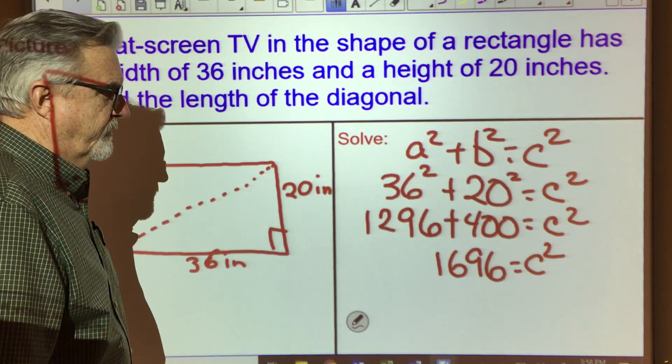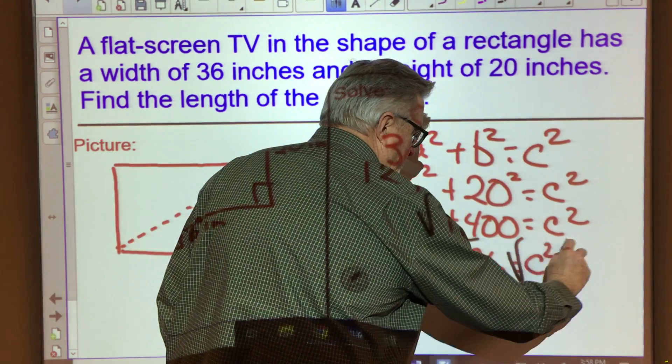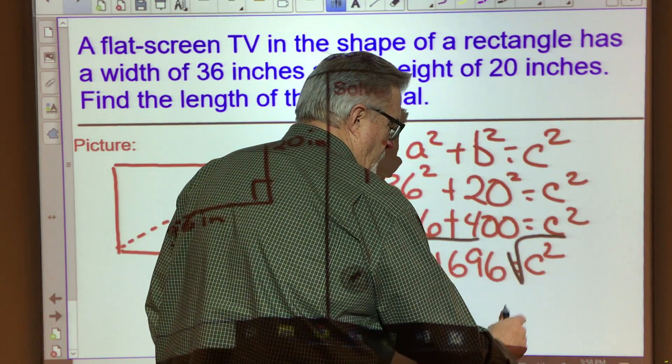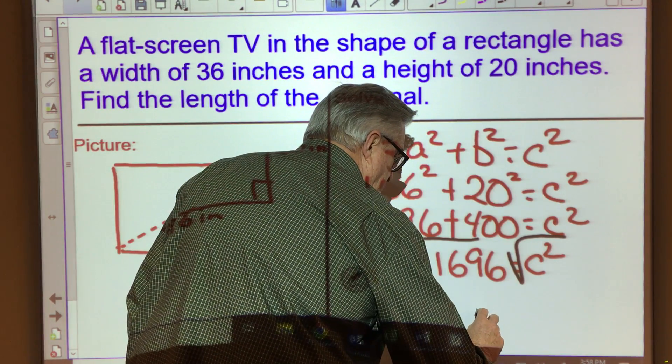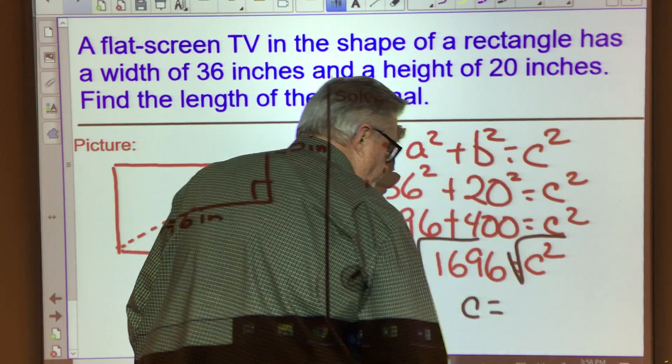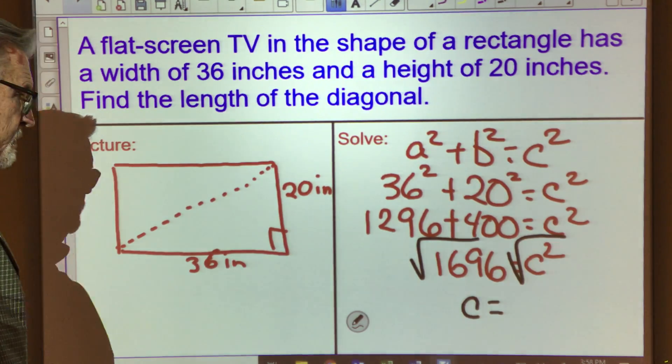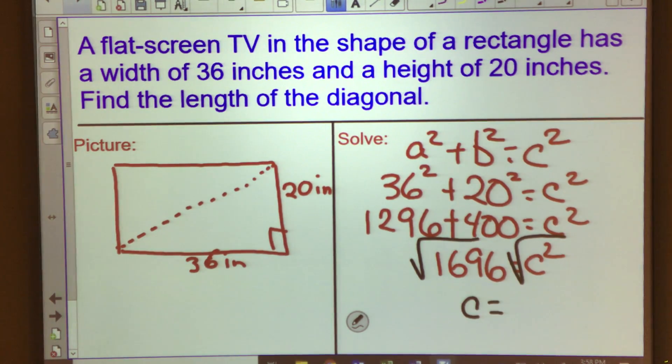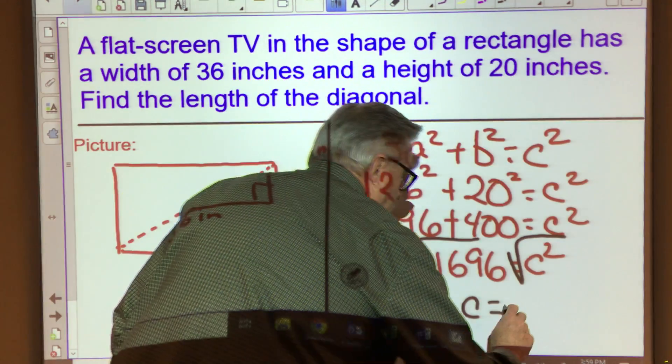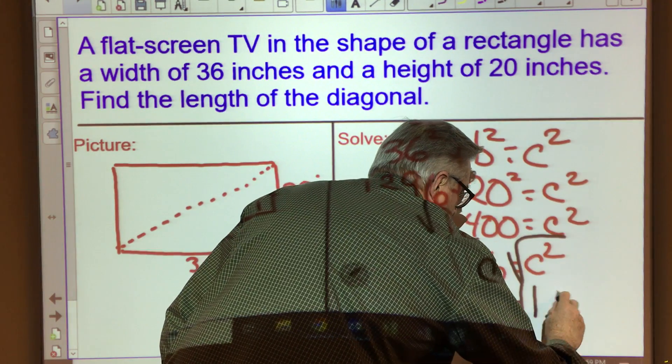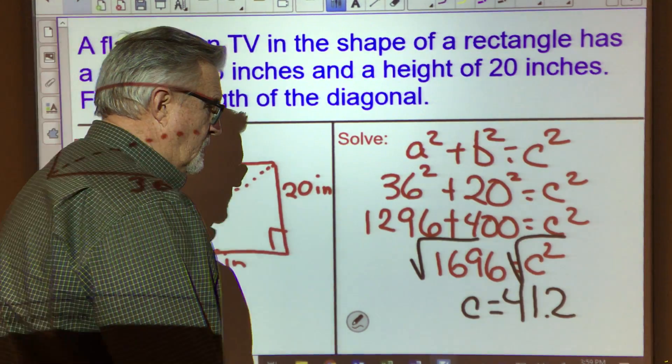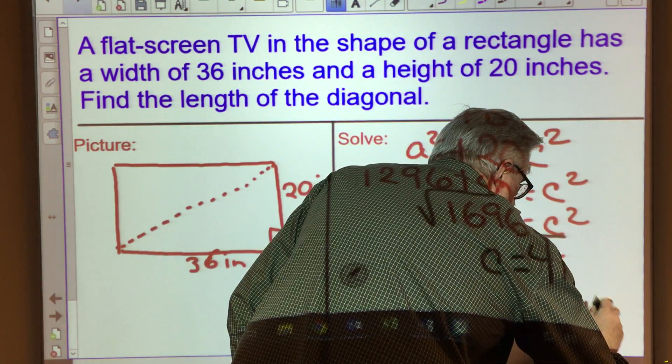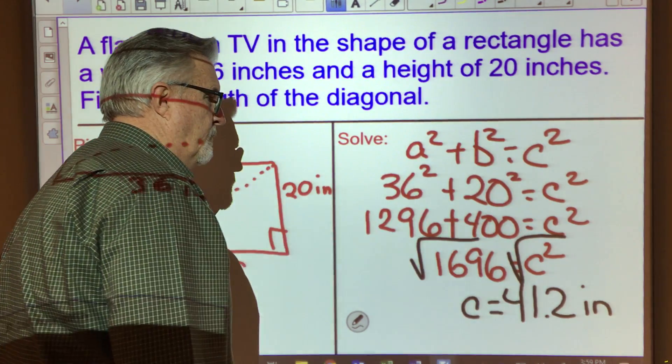Our last step, as always when we're working with Pythagorean theorem, is to find the square root because we're not interested in what c squared is, we want to know what c is by itself. So we find the square root of each. And if you do that on your calculator, you're going to come up with, if we round it to the nearest tenth, it's going to be 41.2 inches. So the diagonal would have a length of 41.2 inches.